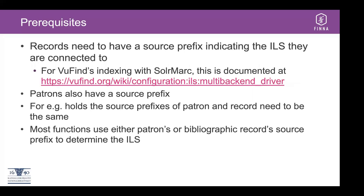But there are some prerequisites for using the multi-backend driver. All the records that are indexed in VuFind's Solr index need to have a source prefix that indicates the ILS they are connected to. Usually this is something like a prefix dot and then the actual identifier. This also allows you to index the same identifier from several sources without them overlapping.